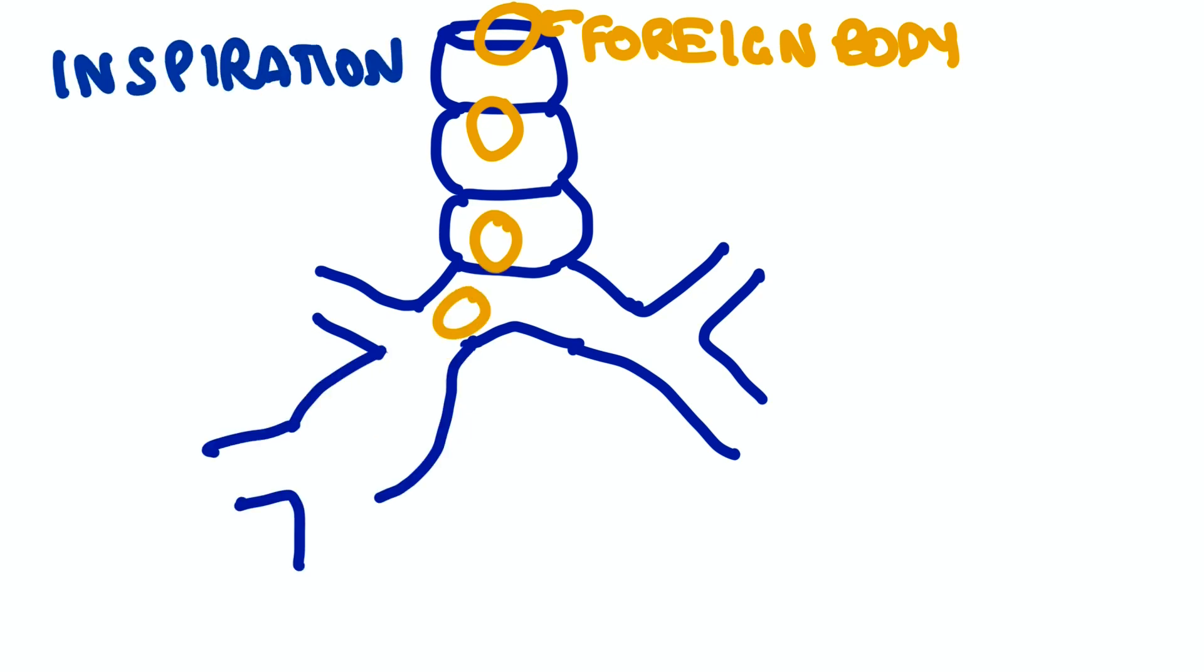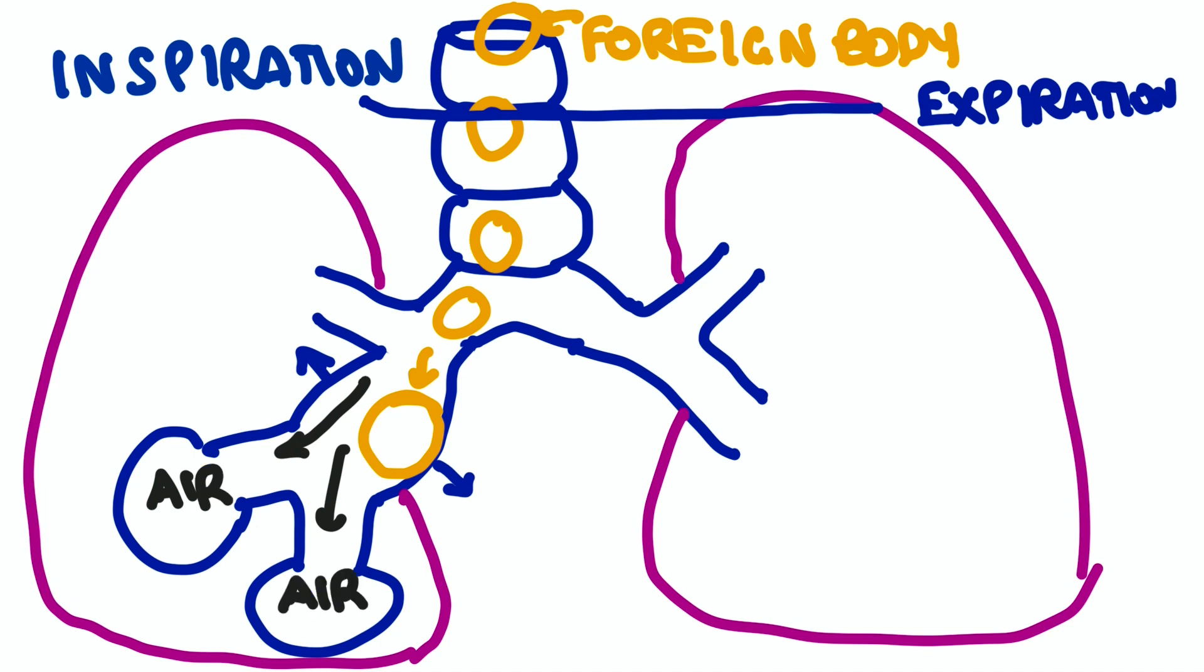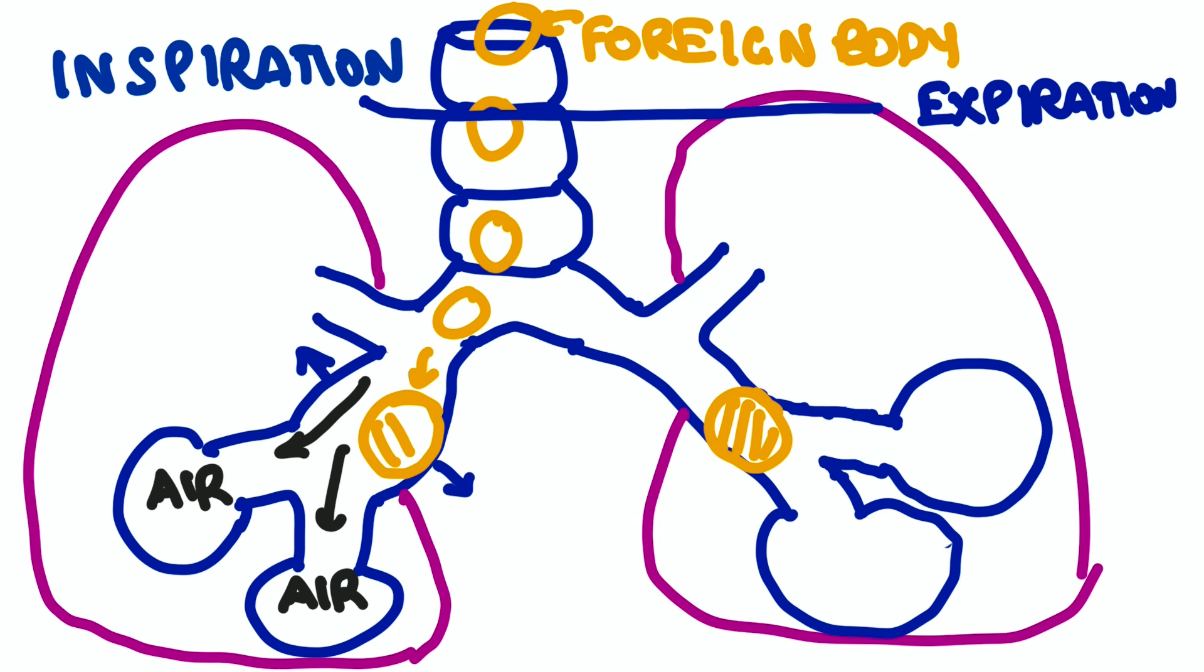Next interesting part is foreign body inhalation. If the foreign body is small in such a way that it can go and lodge in the bronchus, during inspiration bronchi will dilate and air can pass and fill the alveoli. But in expiration, this bronchus gets blocked and leads to air trapping. This air trapping can also cause the same conditions: residual volume increase, pneumothorax, rupture, everything can happen.